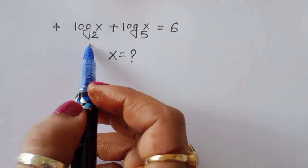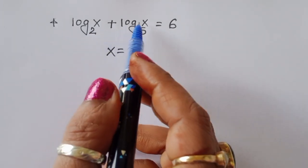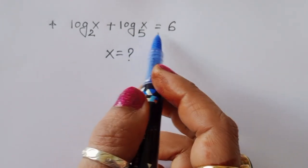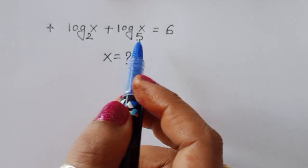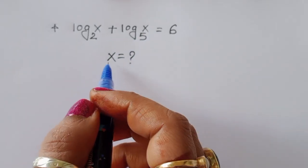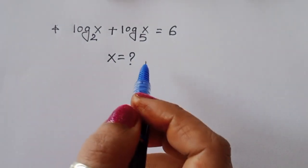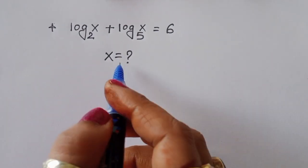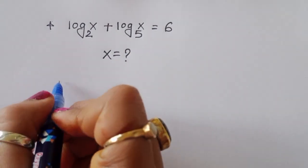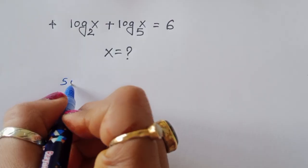Log of x to the base 2 plus log of x to the base 5 is equal to 6. We have to find out the value of x. Let's see the solution.